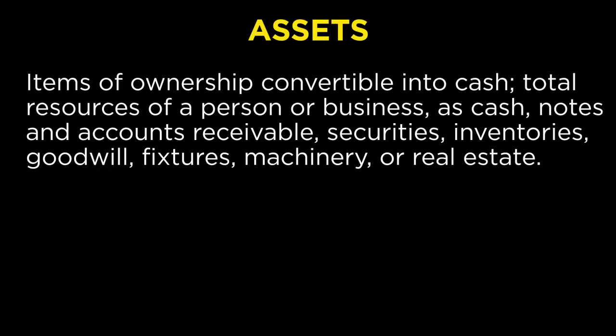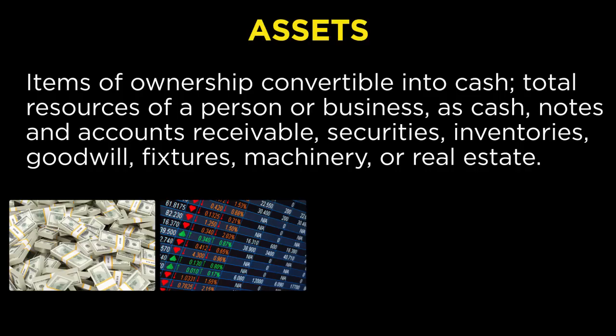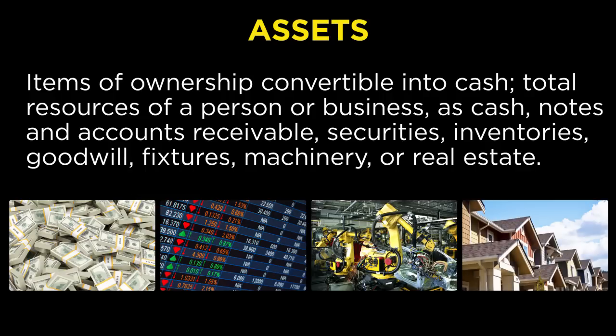Let's begin with assets. What is an asset? One definition is: items of ownership convertible into cash; total resources of a person or business, such as cash, notes, accounts receivable, securities, inventories, goodwill, fixtures, machinery, or real estate. By this definition, an asset is something of value that can be converted into cash or provides access to or enhances a flow of cash. If we simply say assets are bank deposits, real estate, a stock or a bond, and the physical stuff we own, we'd cover the vast majority of what we consider to be our assets.